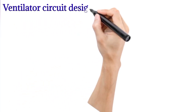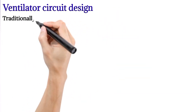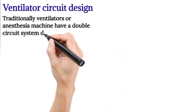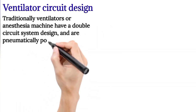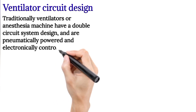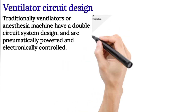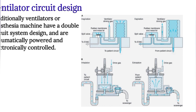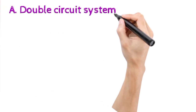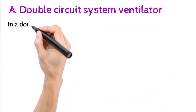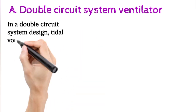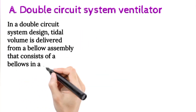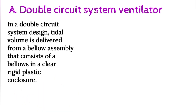Ventilator circuit design: traditionally, ventilators on anesthesia machines have a double-circuit system design, and are pneumatically powered and electronically controlled. In a double-circuit system design, tidal volume is delivered from a bellows assembly that consists of a bellows in a clear rigid plastic enclosure.